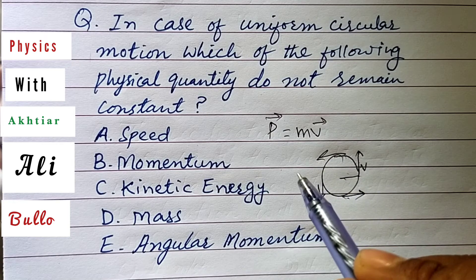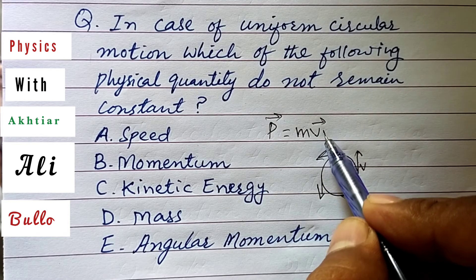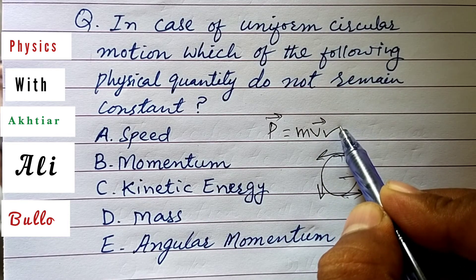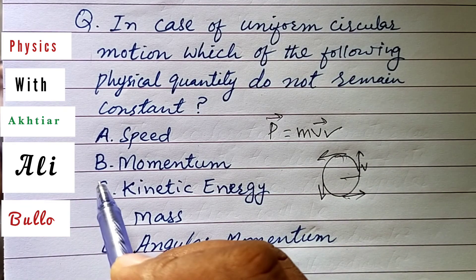point. So linear momentum changes at every point due to the change of velocity. Therefore, the correct option is B. Momentum.